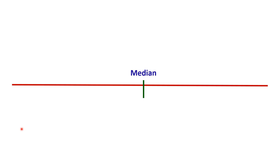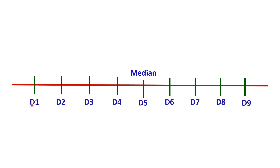Now let us see how a series is divided into ten parts by the deciles. The series is divided into two equal parts by the median, which is the middlemost value. We add nine deciles or nine breaking points to divide it into ten parts. These breaking points are named D1, D2, and so on up to D9. An important point is that the fifth decile, D5, is the middlemost point and will always be equal to the median.